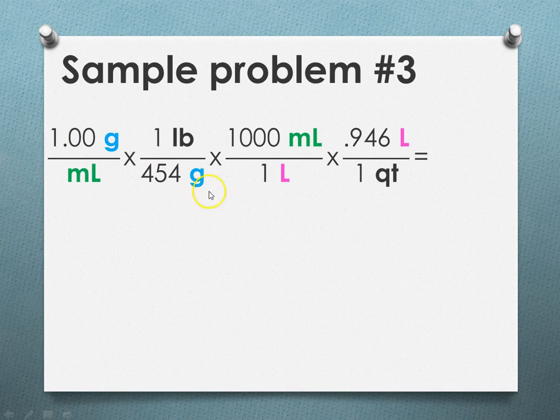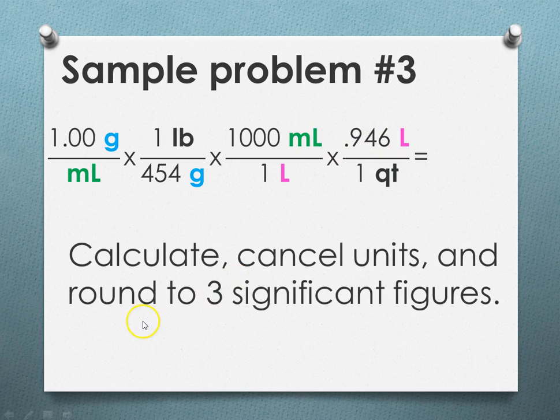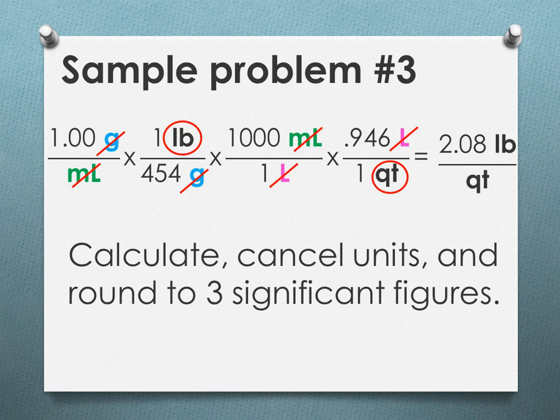Now for the setup. So here you'll see I started with the given and I went from grams to pounds using our conversion from grams to pounds. And then I went from milliliters to liters and then from liters to quarts. So calculate, cancel units, and rounding. So in this case, grams divided by grams equals 1 and it goes away. And then milliliters divided by milliliters equals 1, it goes away. And liters divided by liters equals 1, it goes away. This one was a little tricky because we were dealing with unit changes in both the numerator and the denominator. But notice that we ended up with pounds in the numerator and quarts in the denominator, which was what we wanted. Now we can multiply across the top and divide by the denominator, and we end up with 2.08 pounds per quart. And this number has three significant figures, as did our given.